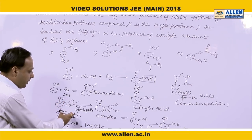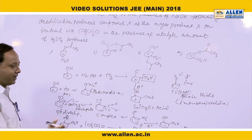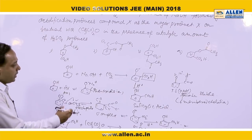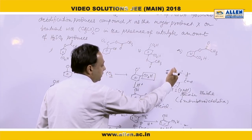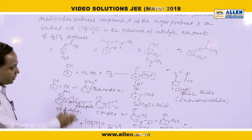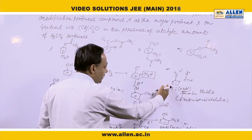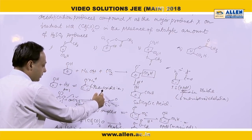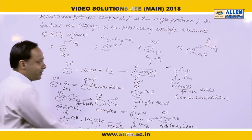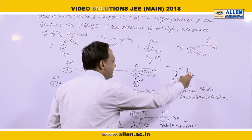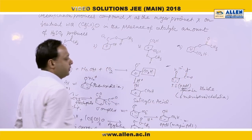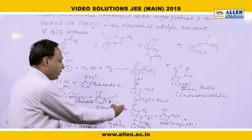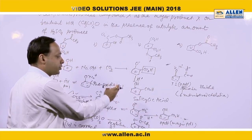Since the group is ortho-para directing, generally the para product should be the major product — so why is the ortho product the major product here? To understand this, we examine the transition state structure. In the transition state, oxygen has a delta-negative charge, and this transition state is very stable because of six-membered chelation. That is the reason the ortho product forms as the major product, which is called salicylic acid.